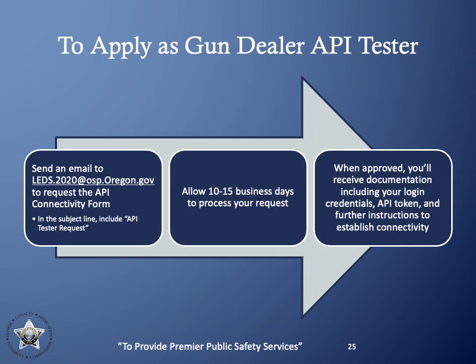Now that you understand what the API is and how it is used, you may be interested in applying as a gun dealer API tester to get a first-hand look at how the API will function. OSP and DCI are seeking up to five gun dealers to help test the new API tool. If you are interested, please send an email to our project email address and allow 10 to 15 days for a response. OSP will be looking to include as much of a varied sampling of customer types as possible for this test group.